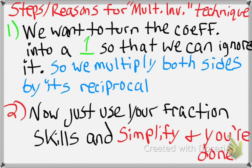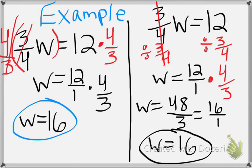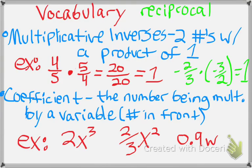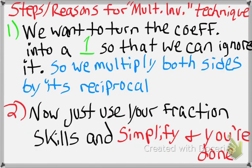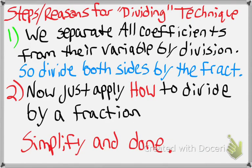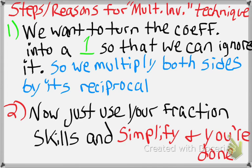If you prefer the multiplicative inverse technique: first, understand we want to turn the coefficient into a one, because if we can turn the coefficient into a one, we can ignore it. So we multiply both sides by the coefficient's reciprocal. For example, the coefficient was three-fourths, so we multiply both sides by four over three — because four over three times three over four equals one, by the multiplicative inverse property. Then, step two: use your fraction skills, multiply both sides, simplify, and you're done.